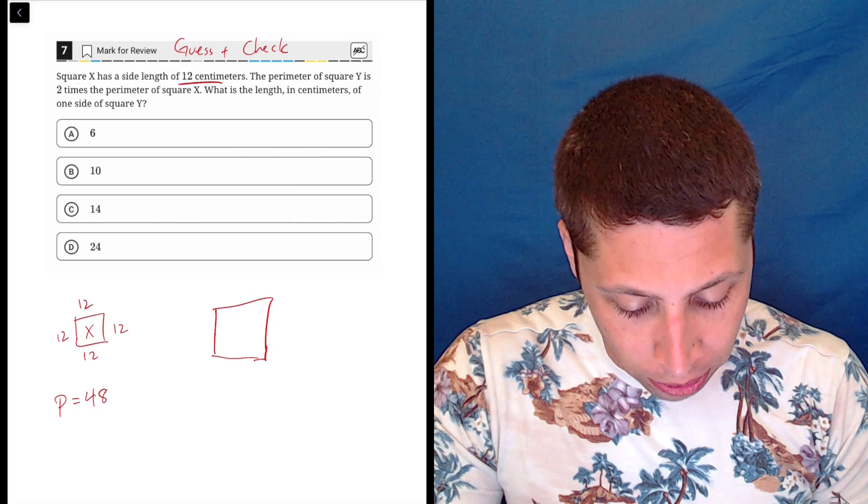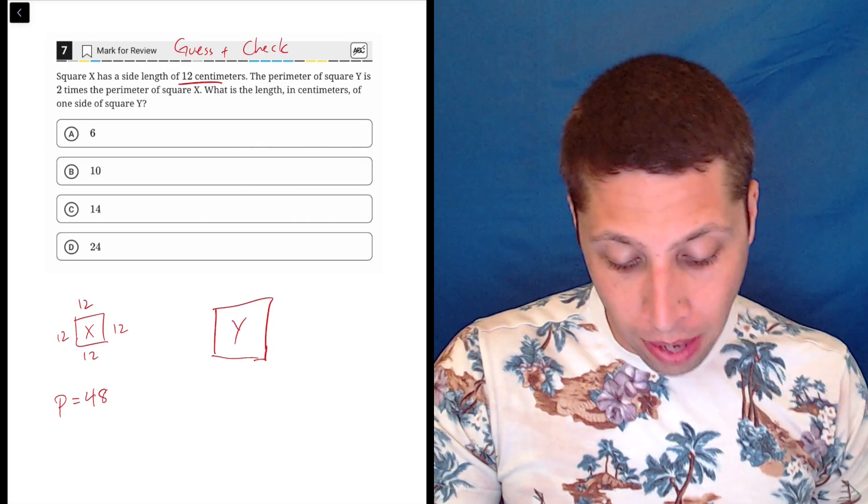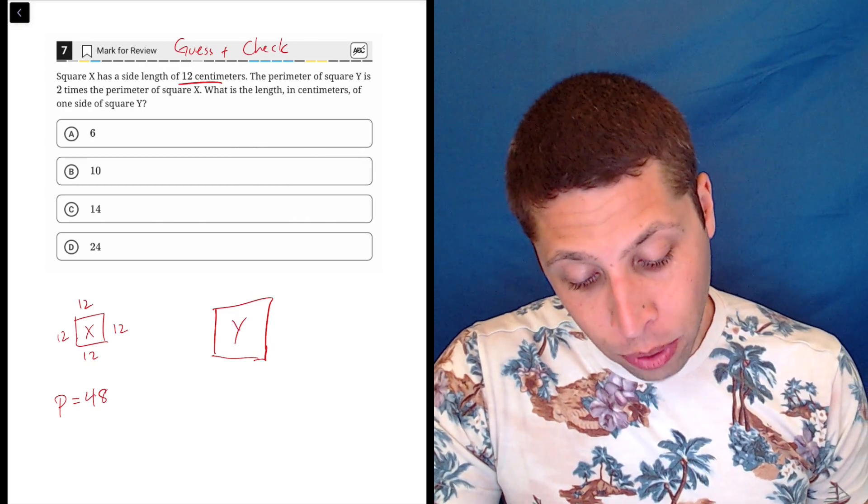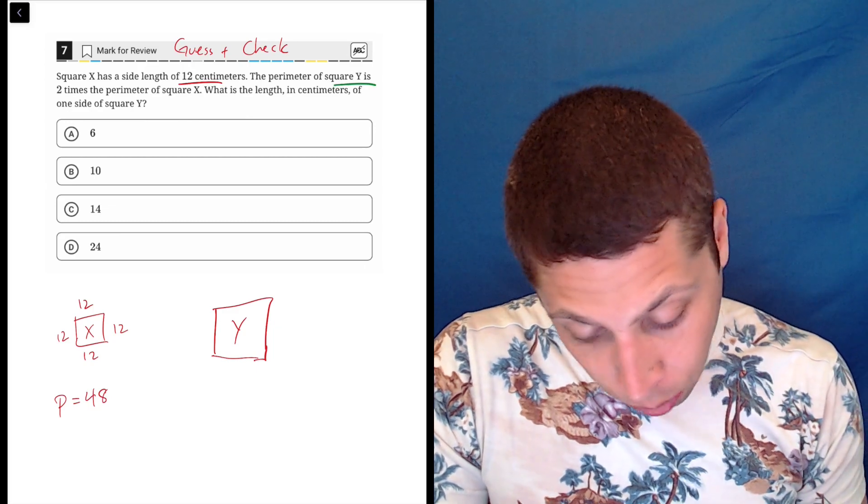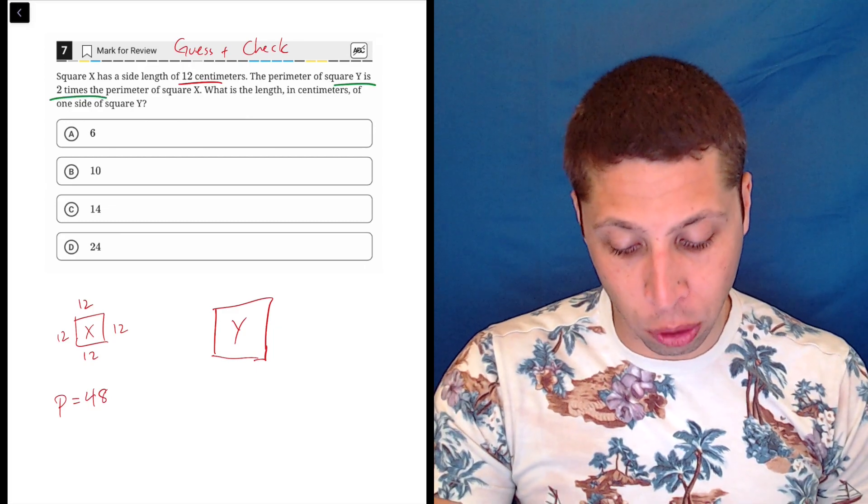Now we get to y, which is a bigger square, so I'll draw a little bigger. And they want it so that the perimeter of square y is two times the perimeter of square x.